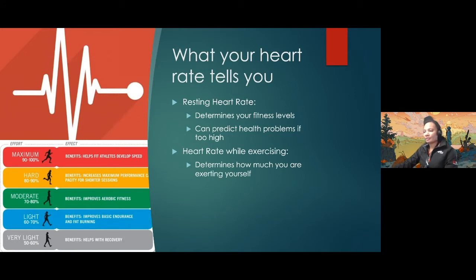A person's maximum heart rate is measured as 220 minus their age. This is just an approximation though and is not foolproof, but gives a good idea of how high your heart rate should be going during exercise. This also gives you an idea of what percentage of your max heart rate you are running at, which corresponds to the benefits that you are getting from it. Your heart rate will increase while exercising or exerting yourself and how much it increases will inform you of how hard your body is working. The time it takes for your heart rate to decrease after exercise will also be able to tell you about your fitness levels.